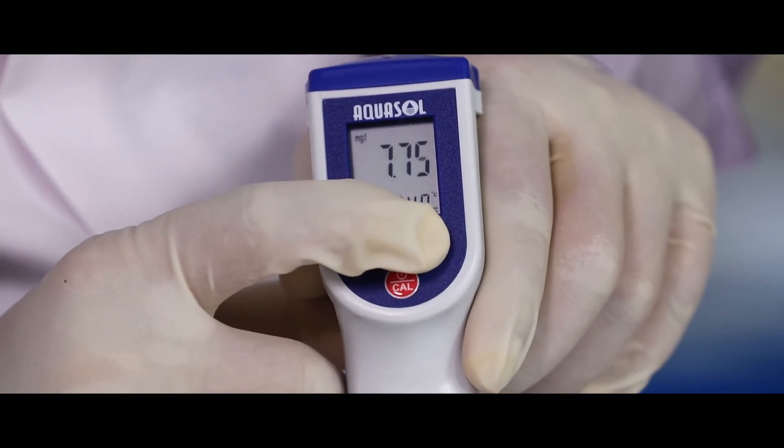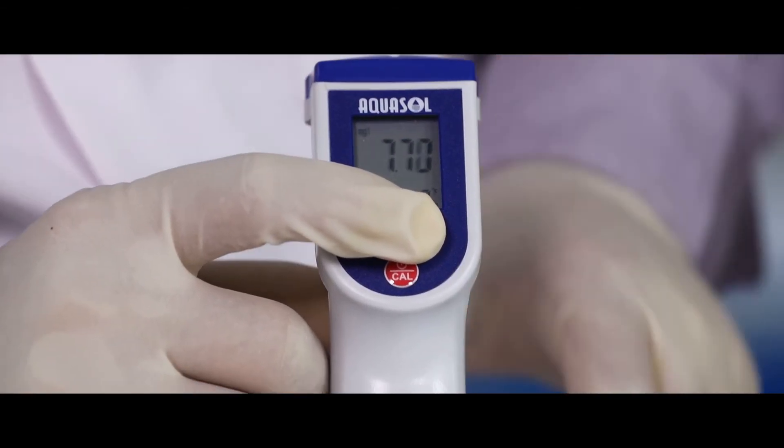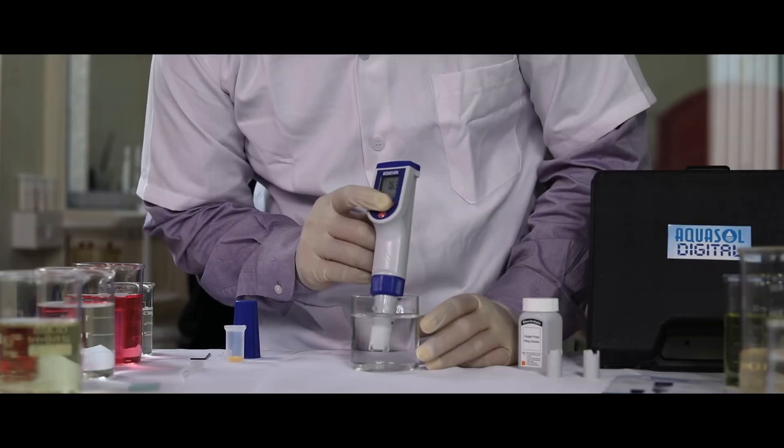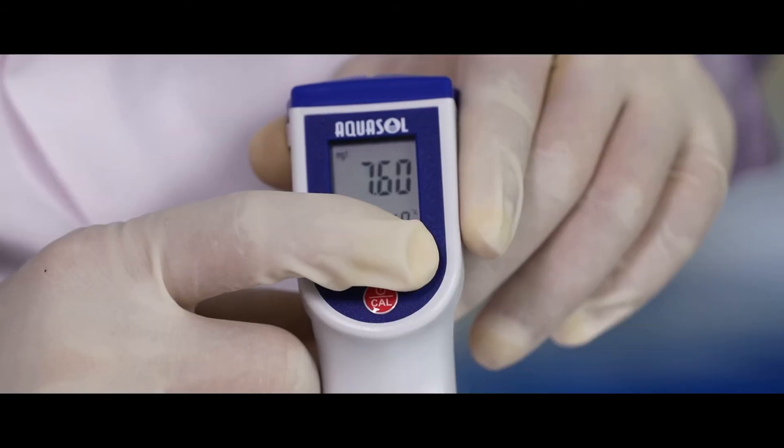Press MODE to find the dissolved oxygen of the sample in different values like mg per liter, percentage, and ppm.